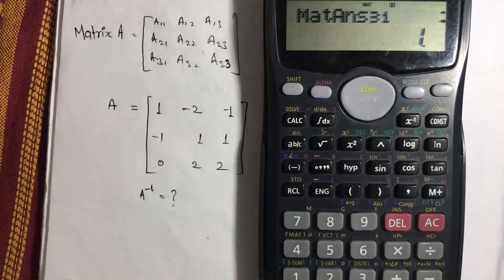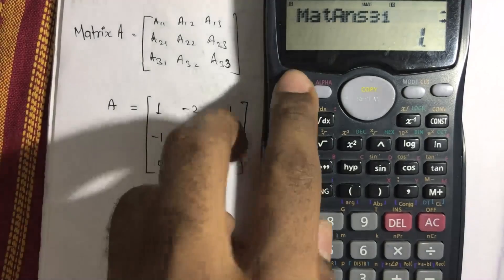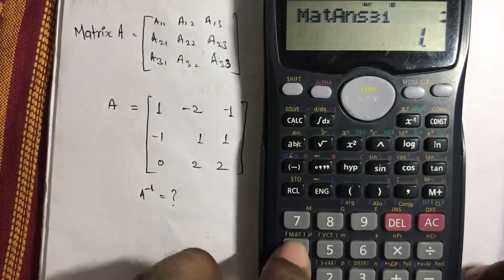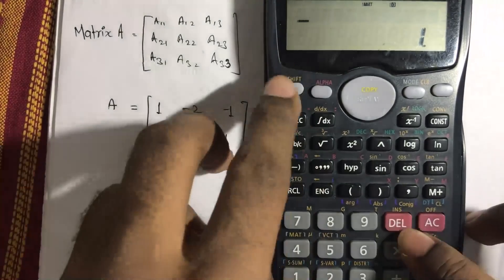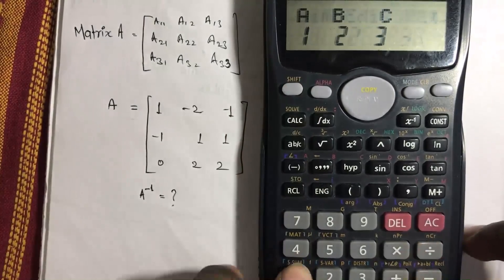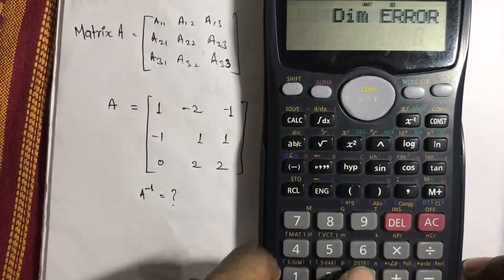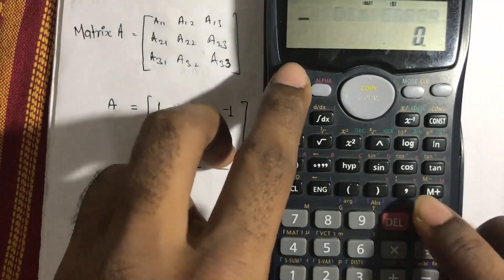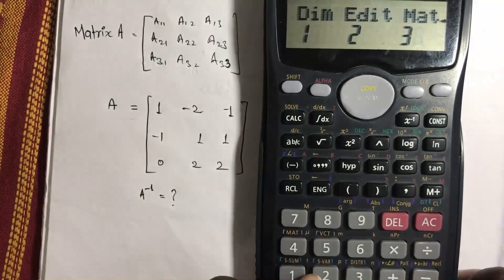Now let's fix another matrix so as to add up two different matrices. Let's go and select the dimension again. Go and select matrix B with the dimension 3 into 3. Okay fine. Again go to 4 and dimension.